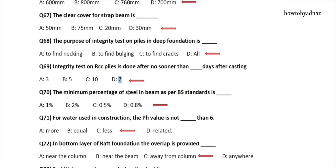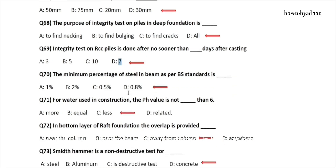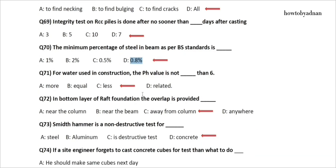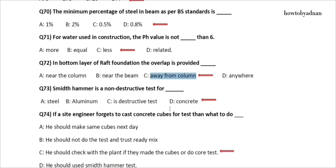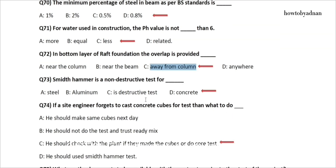Question 70: The minimum percentage of steel in a beam as per BS standards is? The answer is option D: 0.8%. Question 71: For water used in construction, the pH value is not less than? The answer is option C: 6. Question 72: In the bottom layer of raft foundation, the overlap is provided? The answer is option C: Away from column. Question 73: The Schmidt hammer is a non-destructive test for? The answer is option D: Concrete.